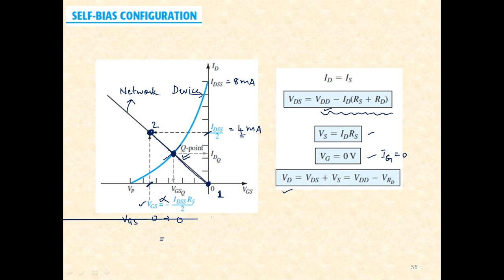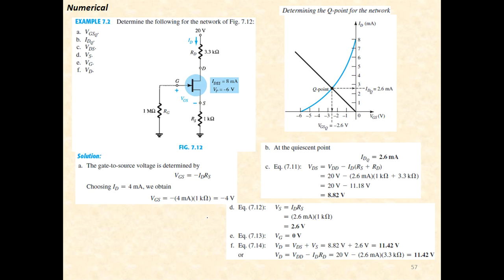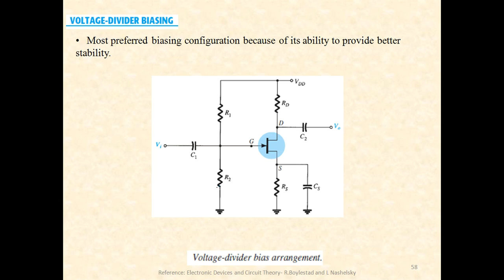The self-bias configuration eliminates the need for two power supplies. The larger the number of power supplies, the more burden on the network; fewer power supplies means a more stable Q point. Self-bias configuration is therefore better compared to fixed bias in terms of stability. The numericals for self-bias are straightforward substitution-based problems using the same expressions.